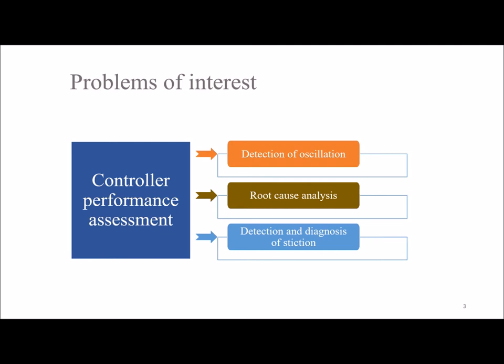The second is root cause analysis — that is, detection of the root node responsible for oscillation or any form of disturbance generated in the interacting control loops. And finally, detection and diagnosis of a phenomenon called stiction in a control loop.